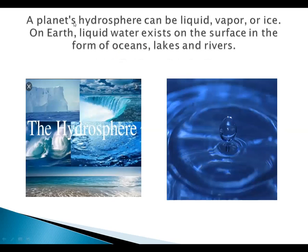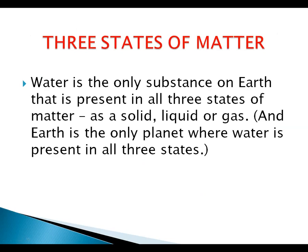A planet's hydrosphere can be liquid, vapor or ice. On earth, liquid water exists on the surface in the form of oceans, lakes and rivers. Water is the only substance on earth that is present in all three states of matter: as a solid, liquid or gas.